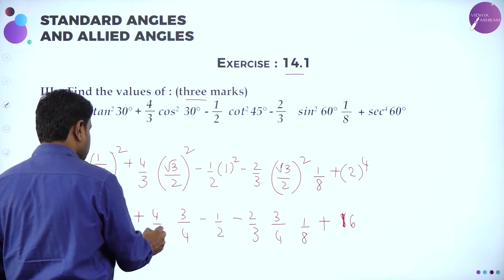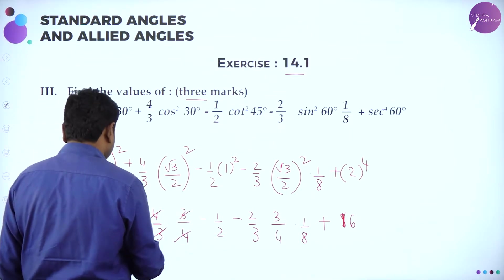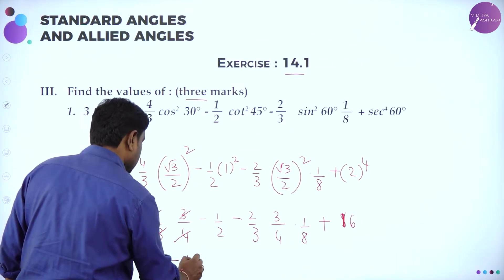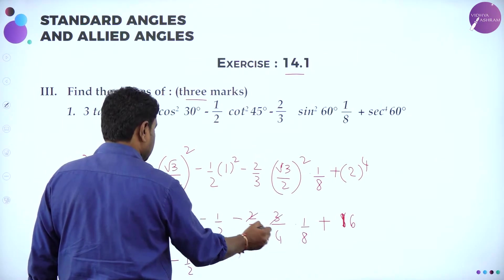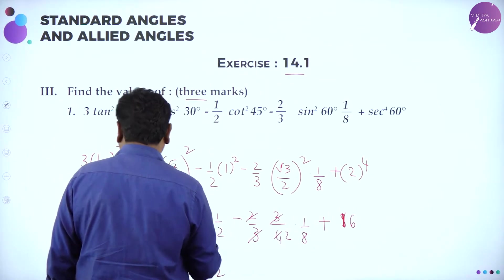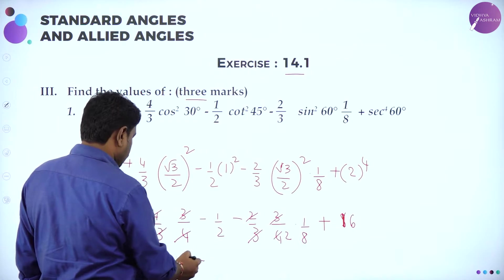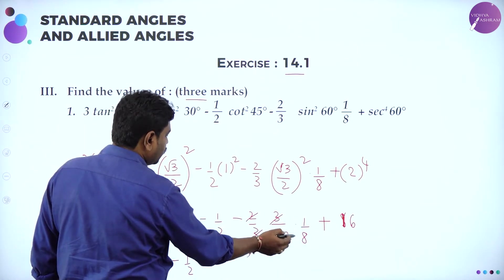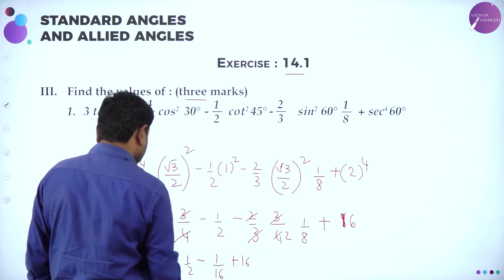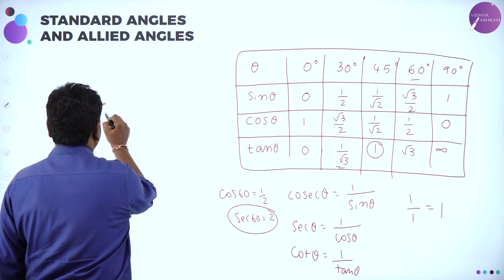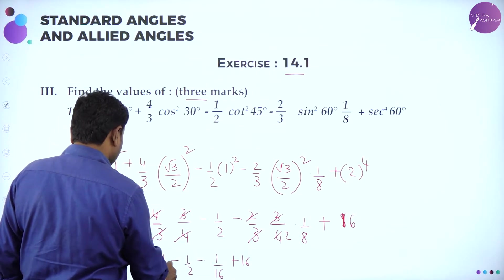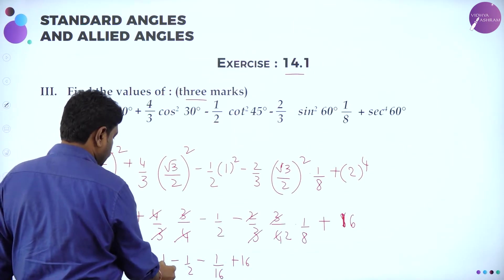After cancellations: 3 and 3 cancel, 4 and 4 cancel, leaving 1 + 1 − 1/2 − (2/3) × (3/4) × (1/8) + 16. That simplifies to 1 + 1 + 16 = 18, minus 1/2 minus 1/16. The LCM is 16: 18 × 16 = 288, minus 8, minus 1 gives 288 − 9 = 279. So the result is 279/16.